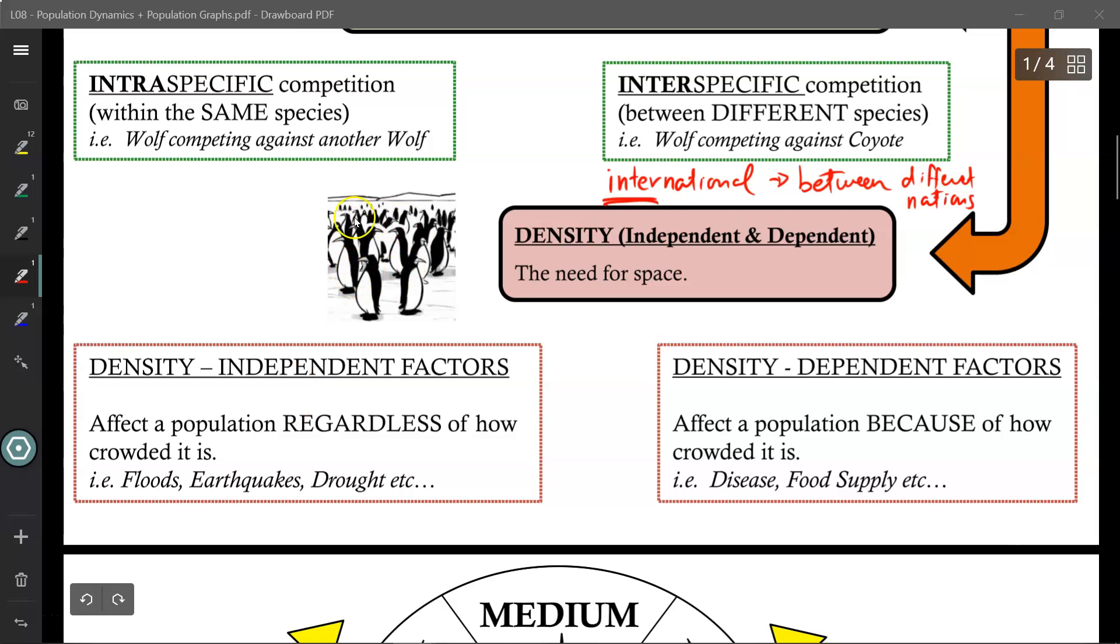However, having more penguins stuck together in a crowded area is more likely to result in disease being passed around. So disease and food supply are examples of density-dependent factors. So if you had very few penguins living together, then you don't have to worry about disease or amount of food as much as you would if there were a lot of penguins living together.